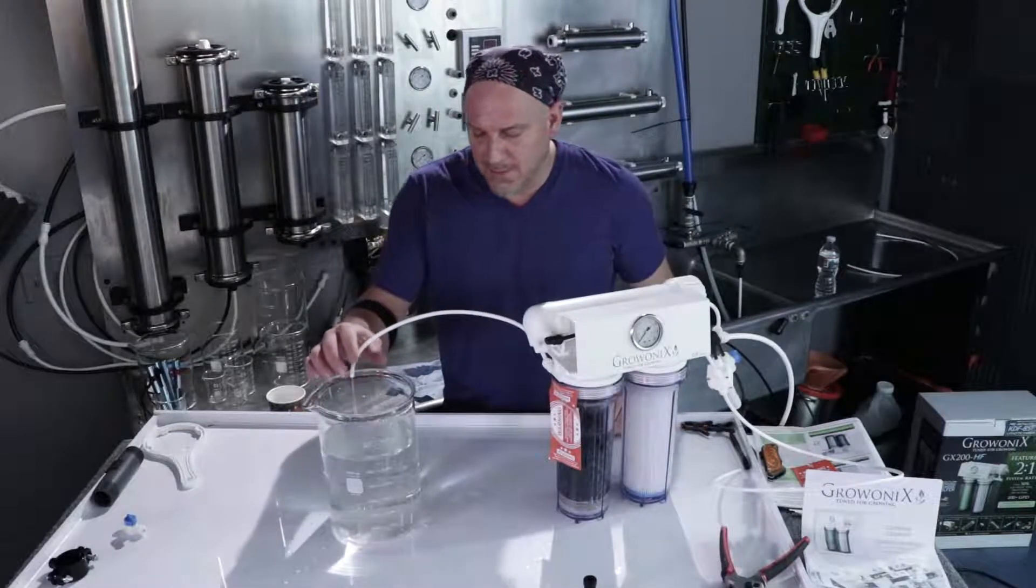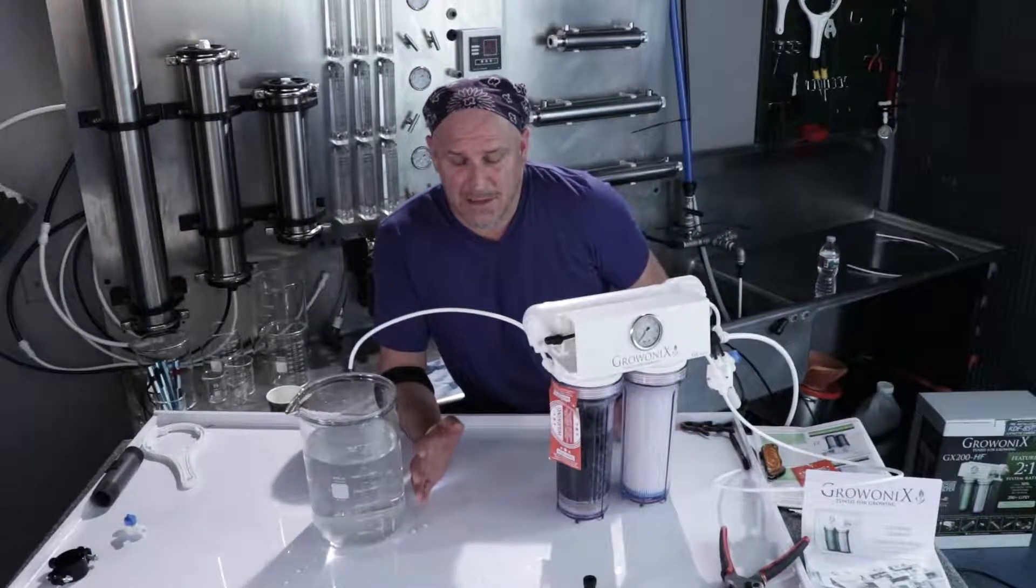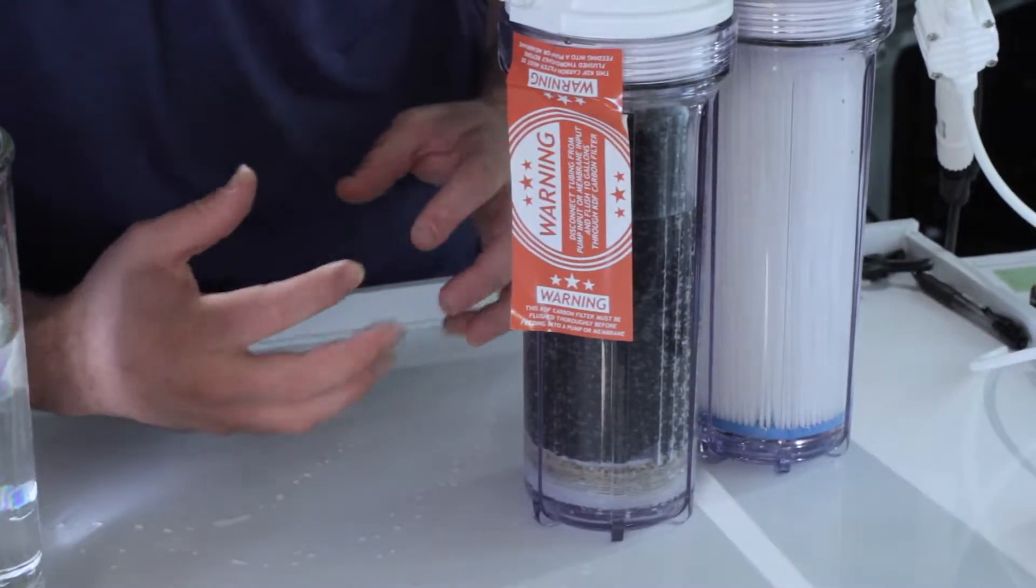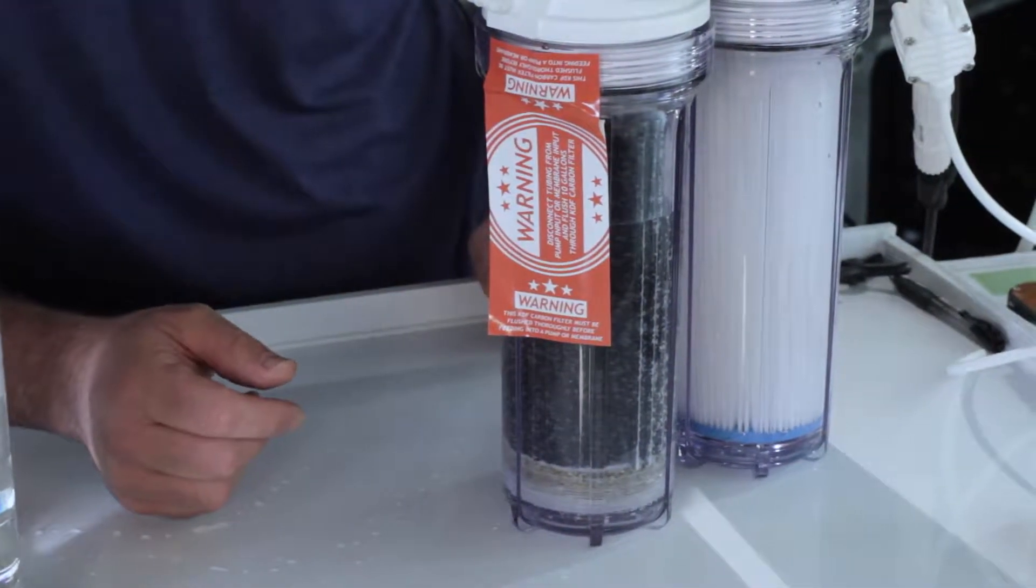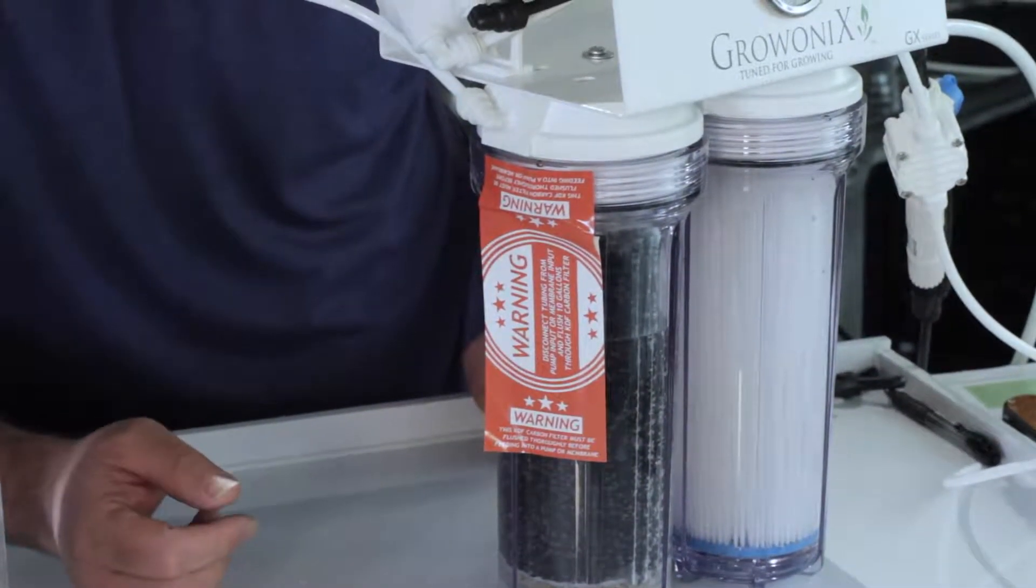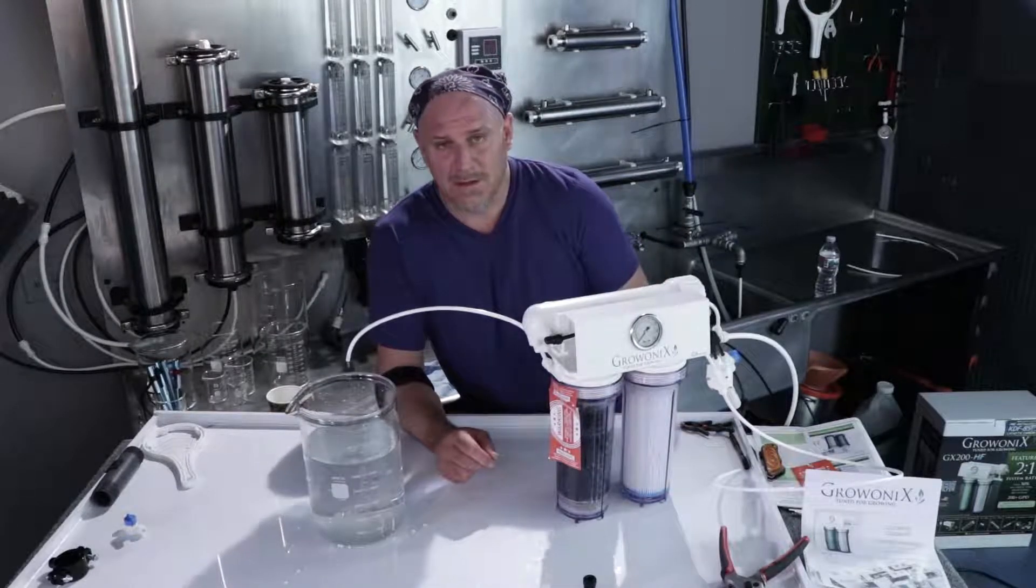I'm going to tell you a little trick though. The best way to flush a KDF carbon is to do what we just did and then let the carbon sit in this water all night. It beds the carbon down. It binds any other loose dust to the carbon chunks, and it becomes less dusty over time. So bedding the carbon down is my favorite thing to do. If you have time, let it sit overnight and let the carbon bed.